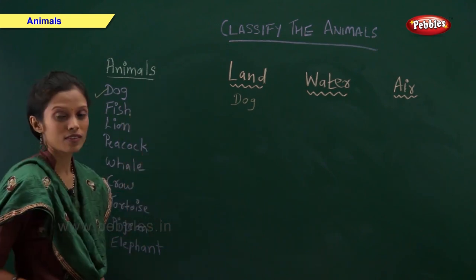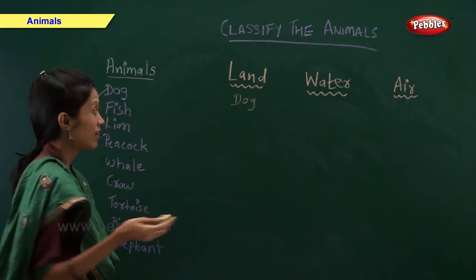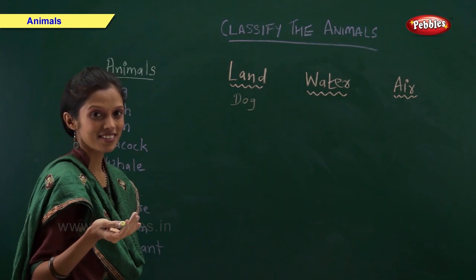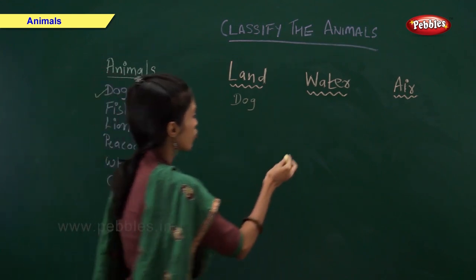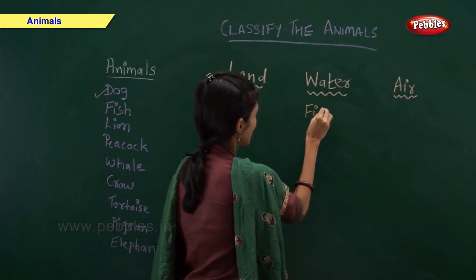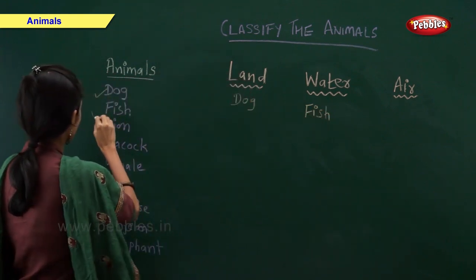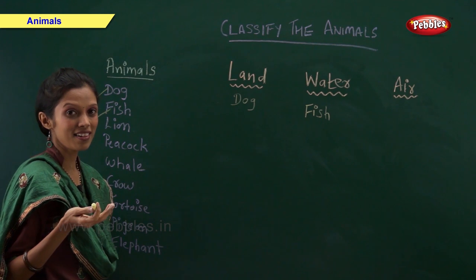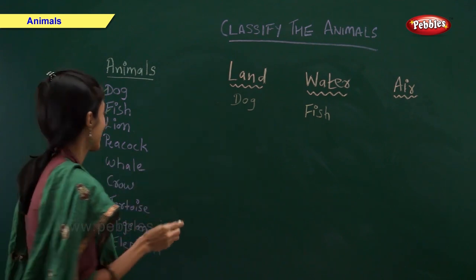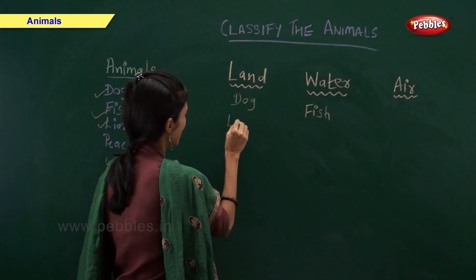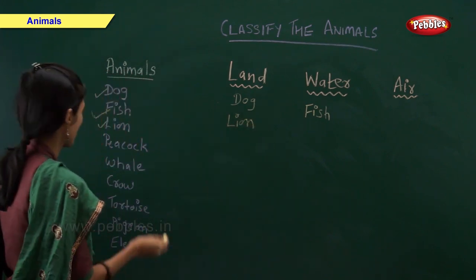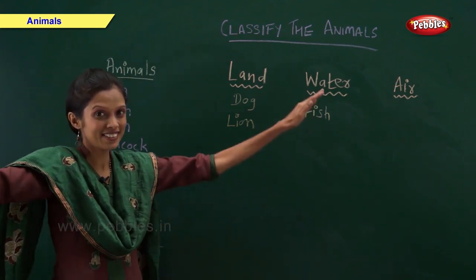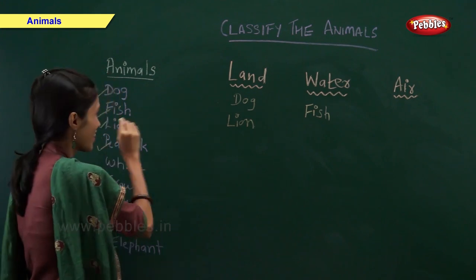Fish — fish is a water animal. Lion — lion is a land animal. Peacock — peacock is an air animal.